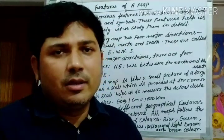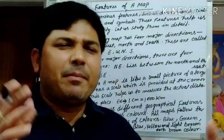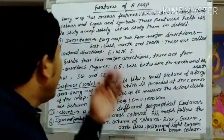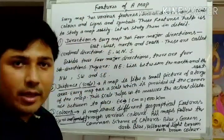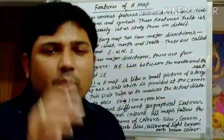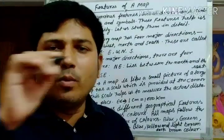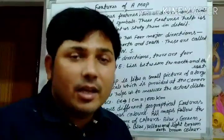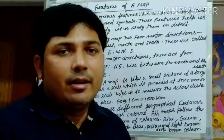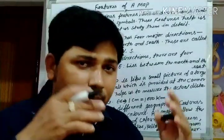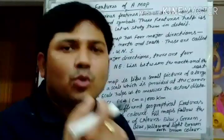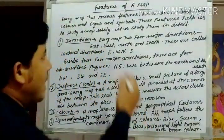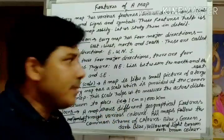Different types of maps also use signs and symbols. These include symbols for homes, roads, rivers, temples, and other features. Signs and symbols are important features of any map.